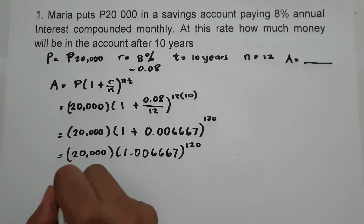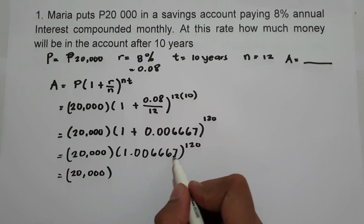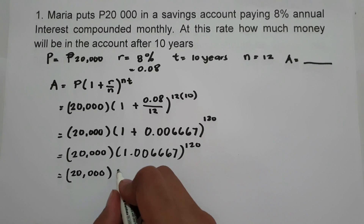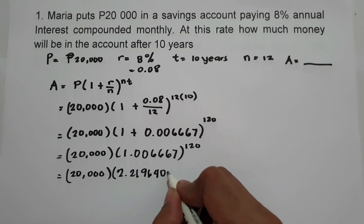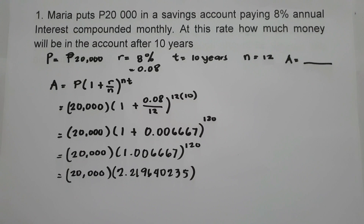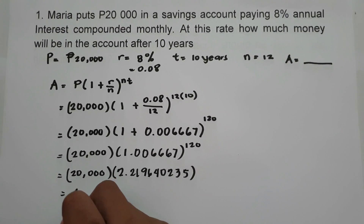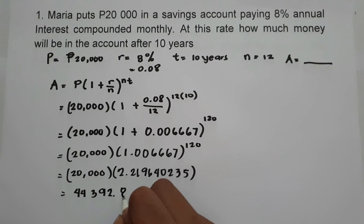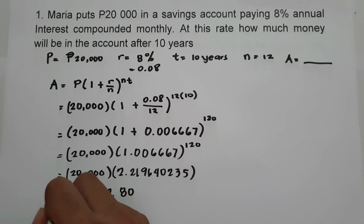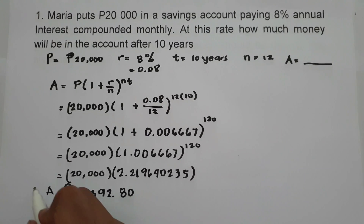Then we evaluate 1.006667 raised to 120, which gives 2.219640235. Therefore, 20,000 multiplied by 2.219640235 equals 44,392.80 pesos. So the future value is 44,392.80 pesos. This is our answer.